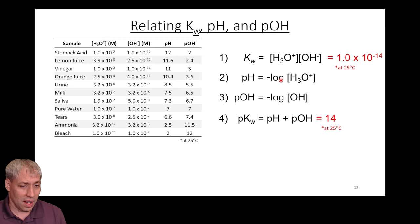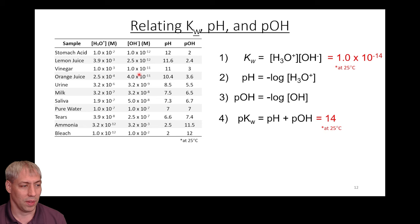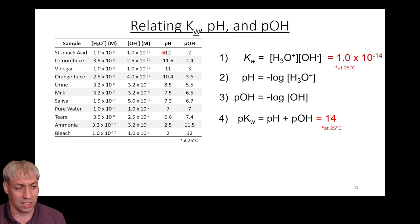To summarize all the key relationships: Kw = H3O⁺ × OH⁻ = 1×10⁻¹⁴ at 25°C. pH = -log[H3O⁺], pOH = -log[OH⁻], and pKw = pH + pOH = 14 at 25°C. If you know any one of these values, you can determine all the others. These are simply different ways to describe how acidic or basic a solution is.